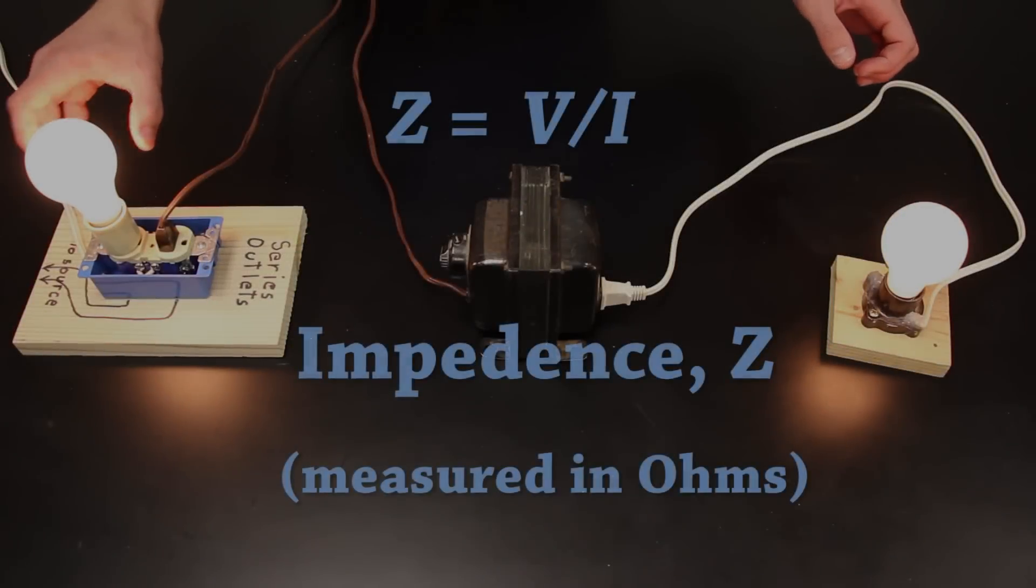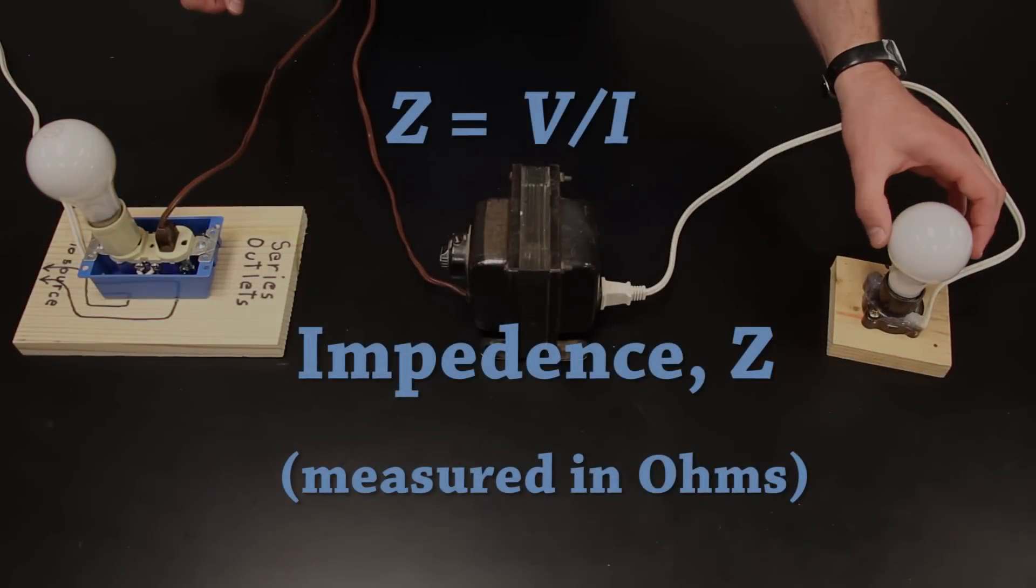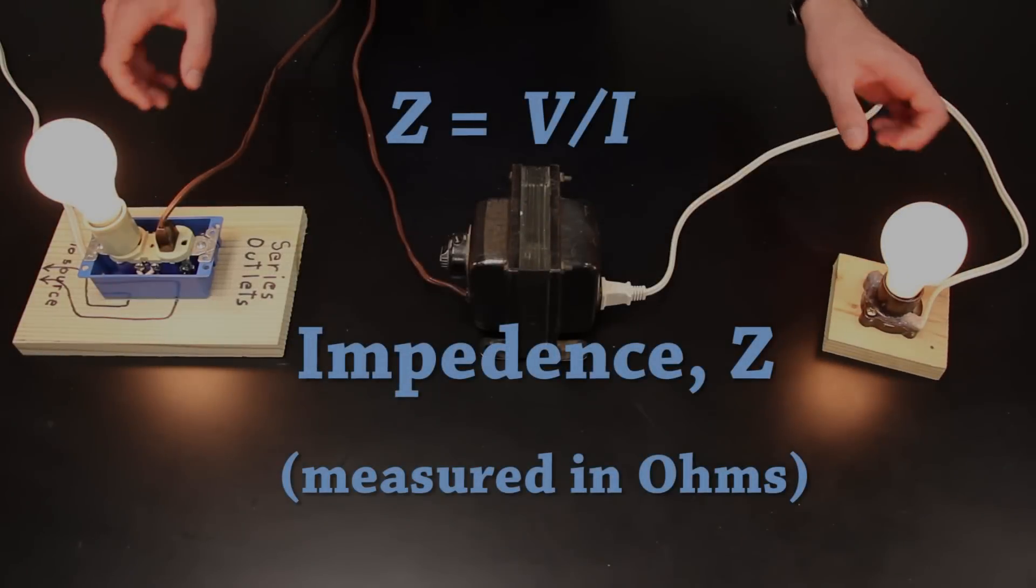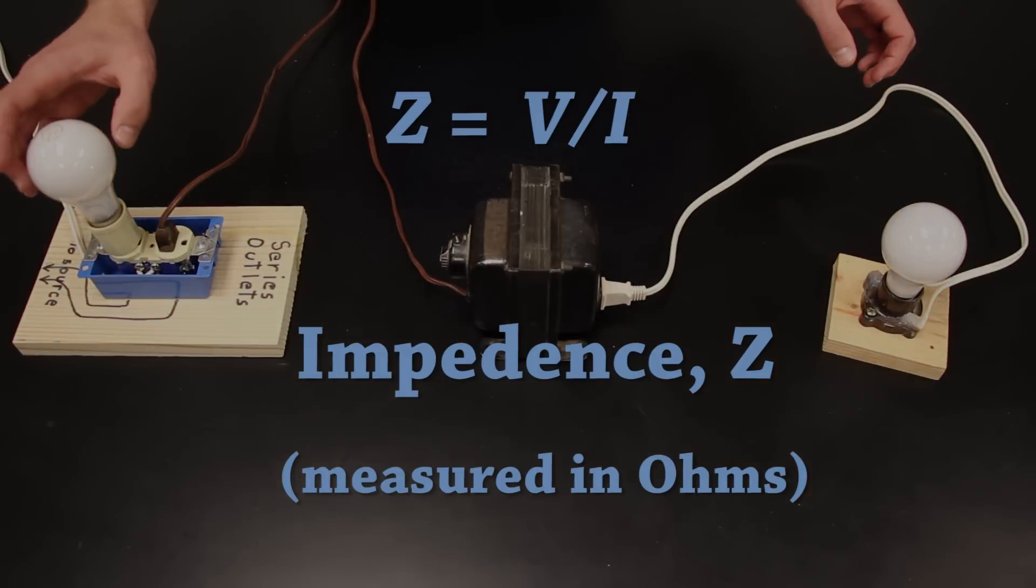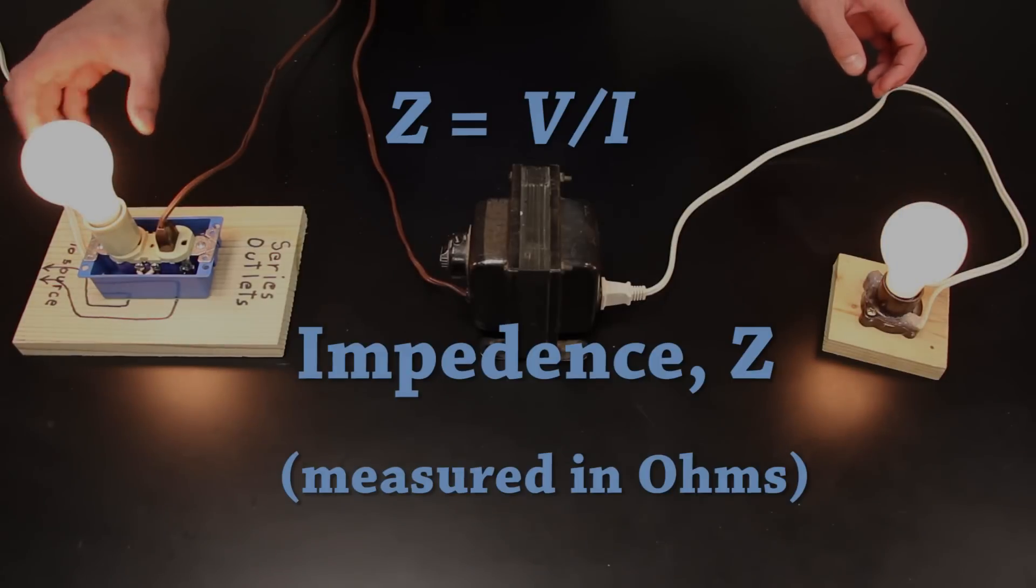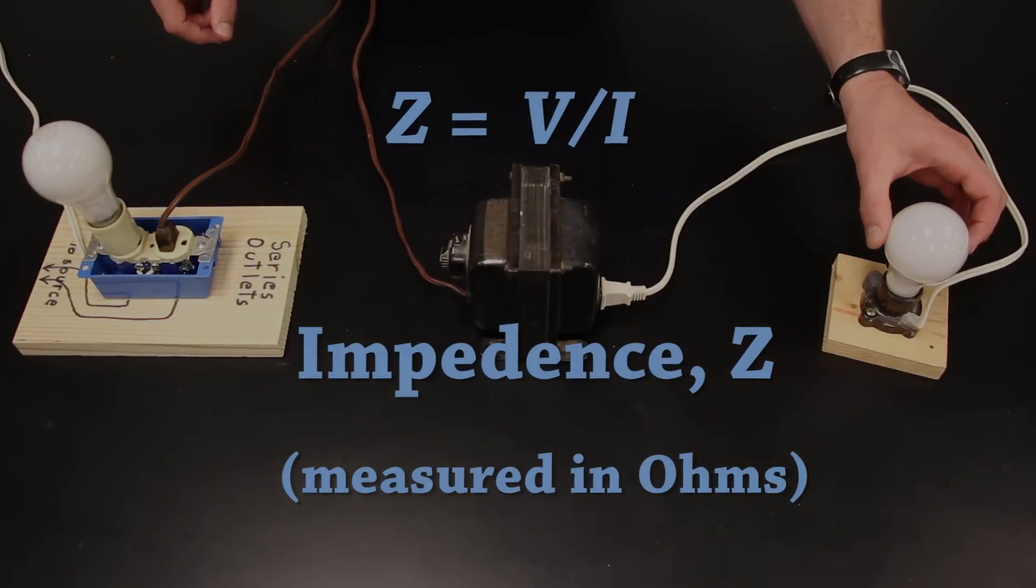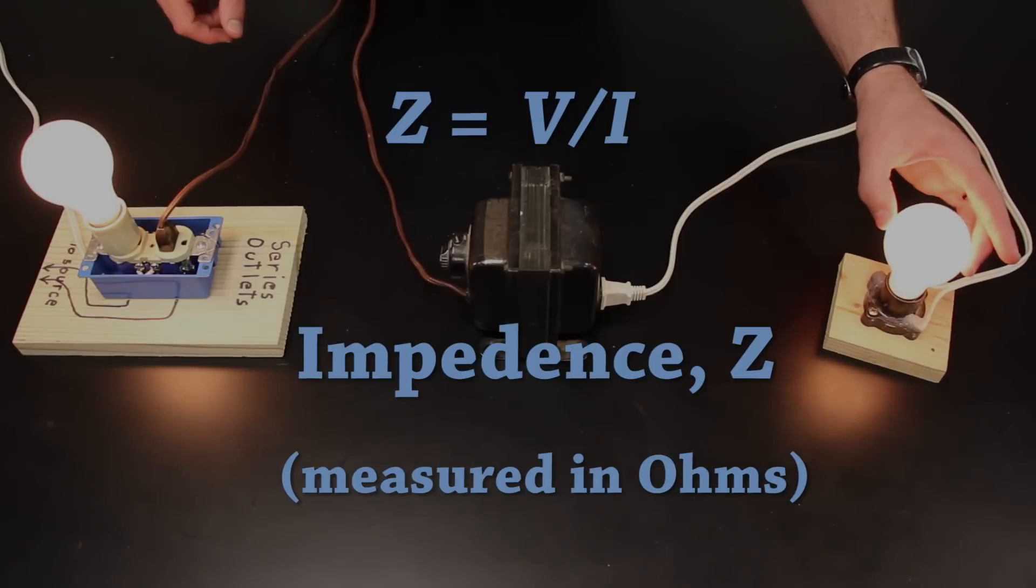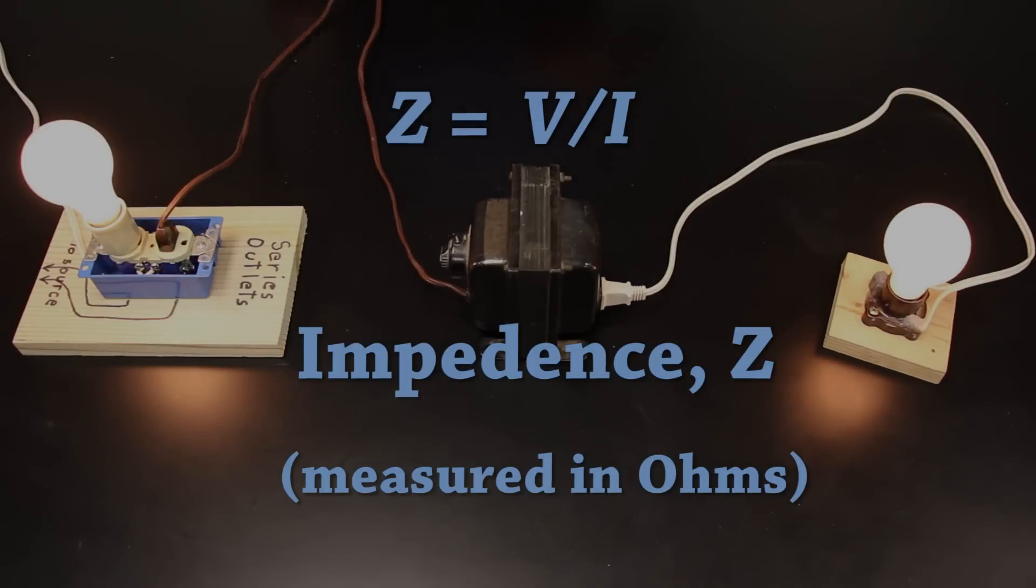Impedance, Z, measured in ohms, is the ratio of the voltage drop across the device to the current that passes through it. This is very much like resistance, but it's a more general term that refers to all the elements of the circuit: inductor coils, capacitors, and resistors.